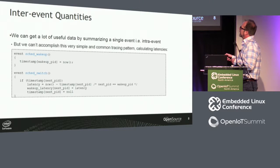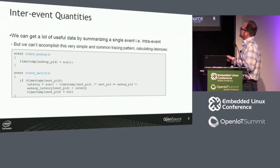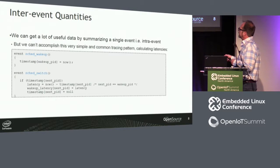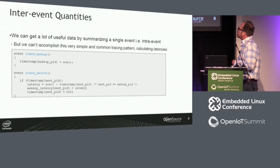So we have our two events: sched_wakeup and sched_switch. The pseudocode is: take the current timestamp and save it into an associative array keyed on process ID (wakeup_pid). Then at a later time, when the sched_switch event comes in, it looks for the corresponding timestamp in the hash table. If it finds it, it calculates the latency — takes the current timestamp and subtracts the saved one — and saves that into a wakeup_latency hash table, then nulls out the timestamp so it doesn't get reused.